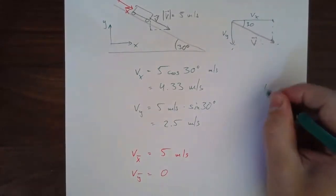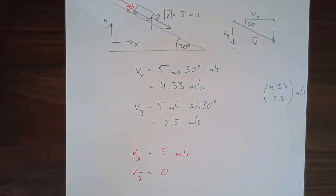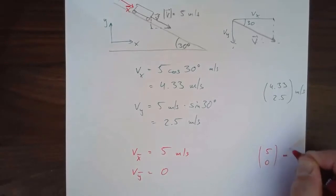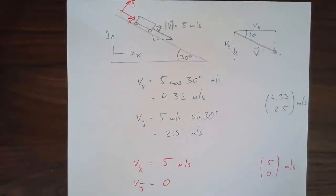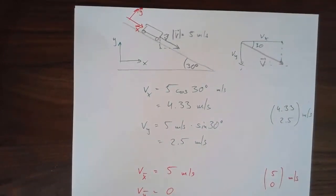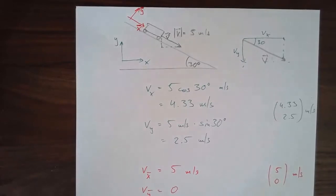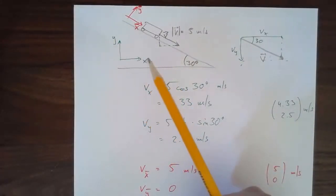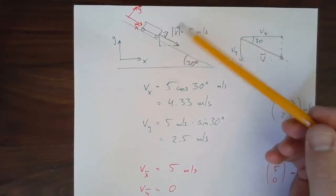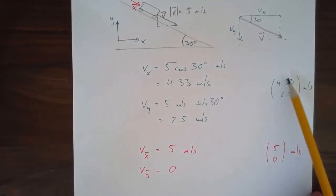Alternatively, I might choose a coordinate system with my x-bar axis pointing down the hill and my y-bar axis perpendicular to the hill. To avoid confusion with the previous x and y, we use the notation x-bar and y-bar — a common physics convention of adding bars, primes, or tildes to create new variable names. In this coordinate system, V in the x-bar direction is simply 5, and V in the y-bar direction is 0 because the motion is entirely along the ramp. These two representations are the same vector expressed in different coordinate systems.